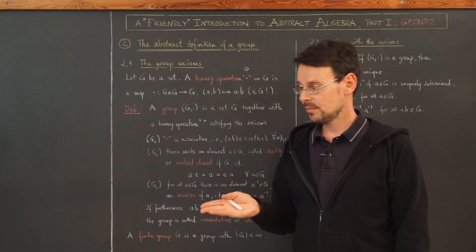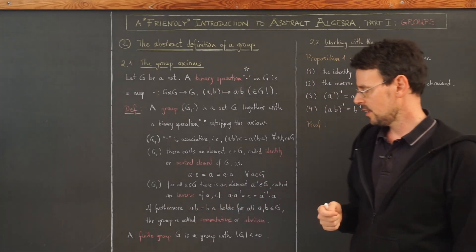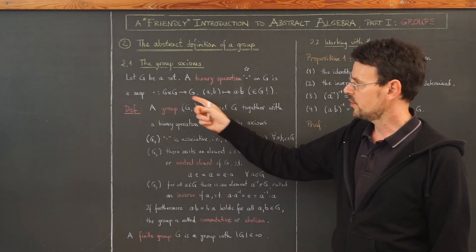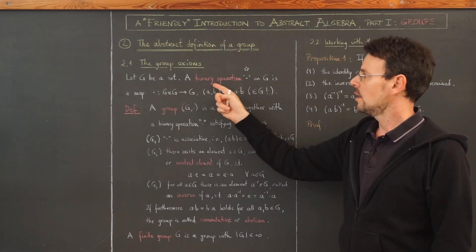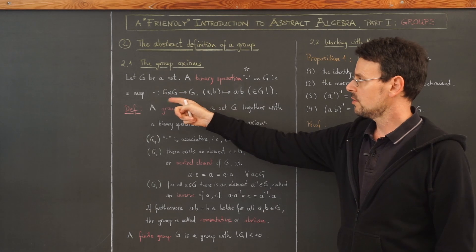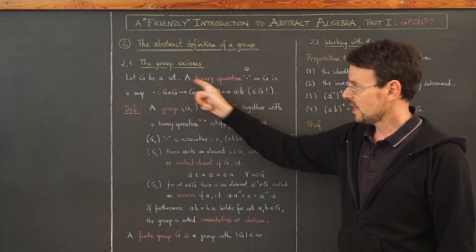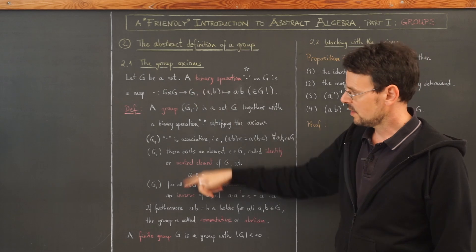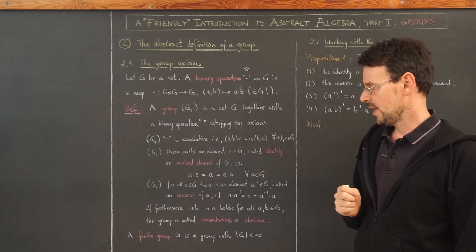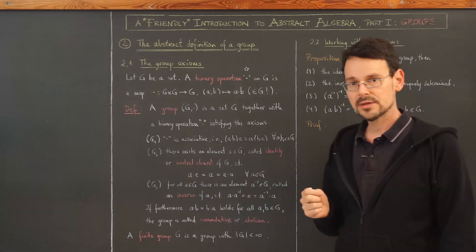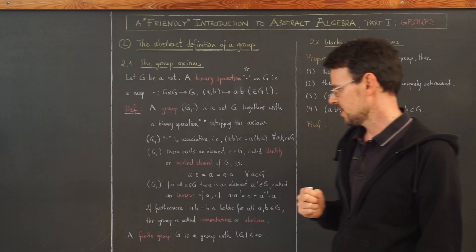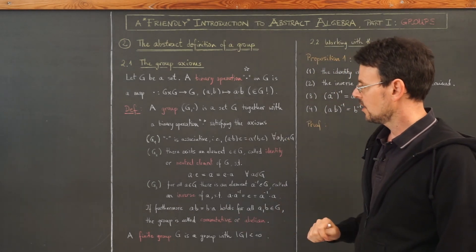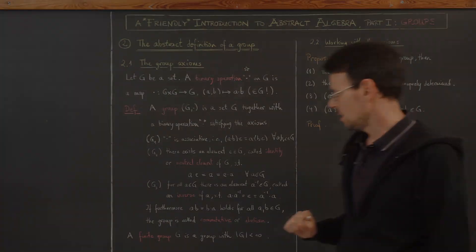In problem set number four, you'll find exercises where you have to check: is a given operation really a binary operation on that set — meaning do I end up in the set again — and does it fulfill the group axioms? Please go check out problem set number four for examples for this abstract definition.